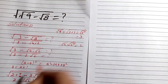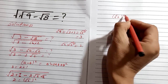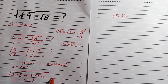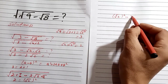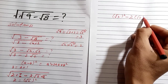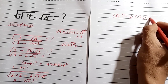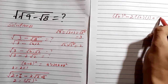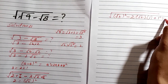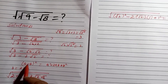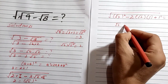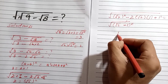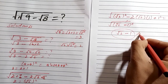We can now write root 2 squared minus 2 times root 2 times 1 plus 1 squared. Comparing with the formula (a minus b) squared, we have a equal to root 2 and b equal to 1. The square cancels with the outer root, so our final answer is root 2 minus 1.